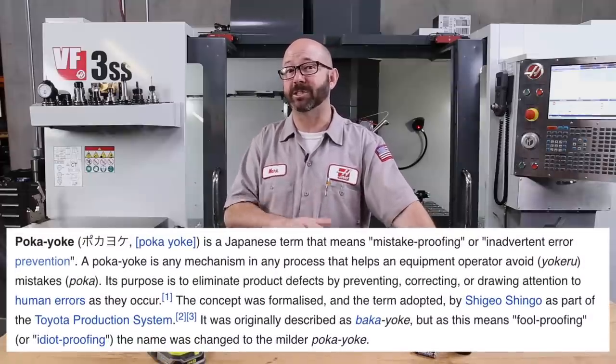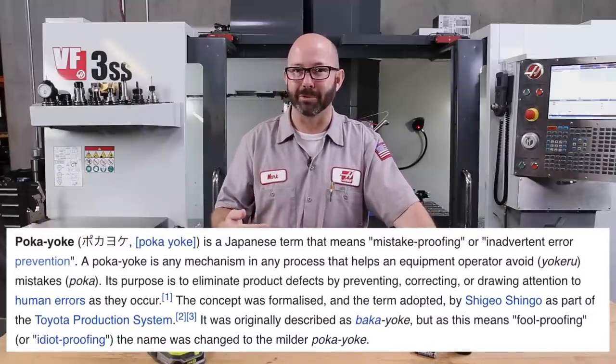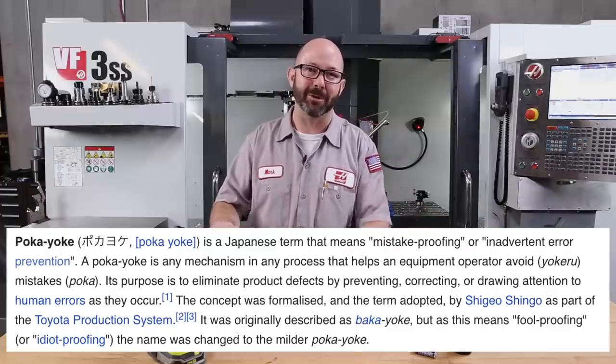Poka-yoke. It's a Japanese term that started off as baka-yoke which means idiot proof. But that seemed a little bit cruel. So we've moved away from that and now we just go with poka-yoke.